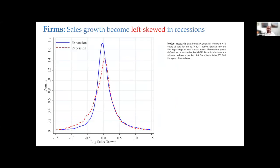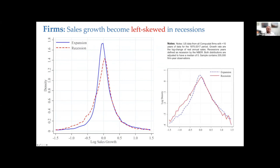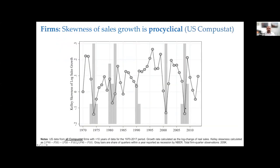Turning to firms, the second main finding is the same is true for firms. Looking at sales growth from US Compustat, you see the same pattern — a larger expansion of the left tail and a thinning of the right tail. In the log-density picture you can see much more clearly how big the flattening of the left tail and the thinning of the right tail are. The time series of the Kelly skewness for sales growth again shows exactly the same pattern.